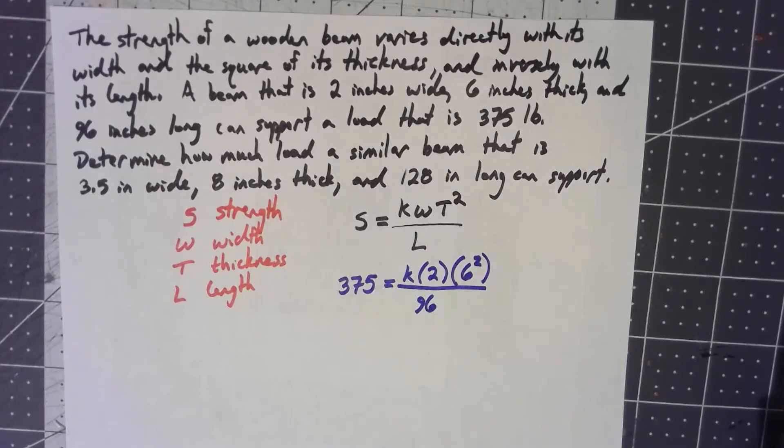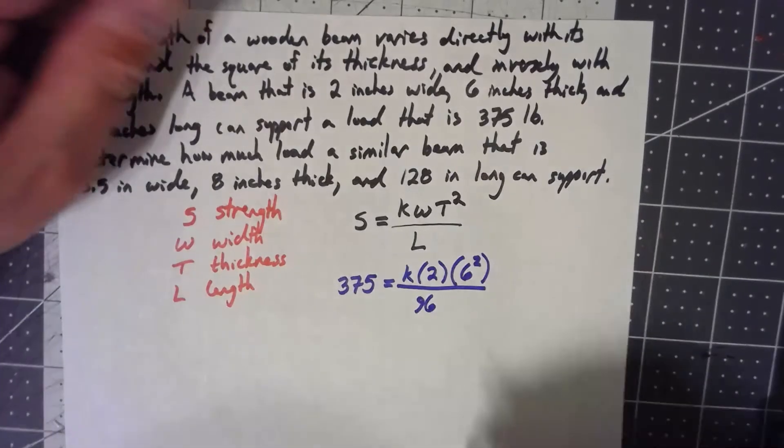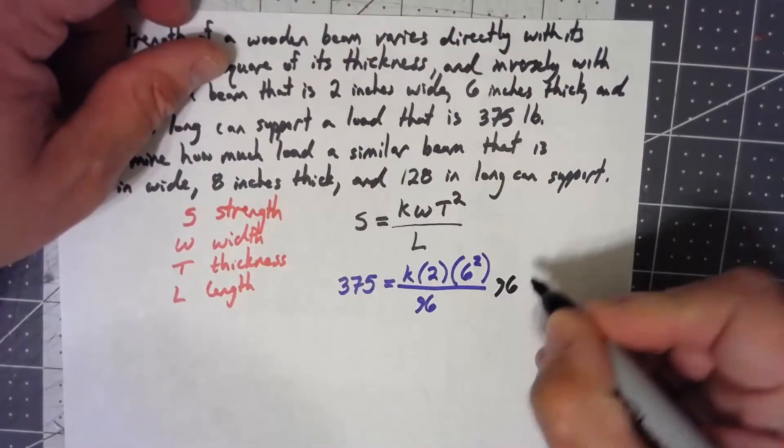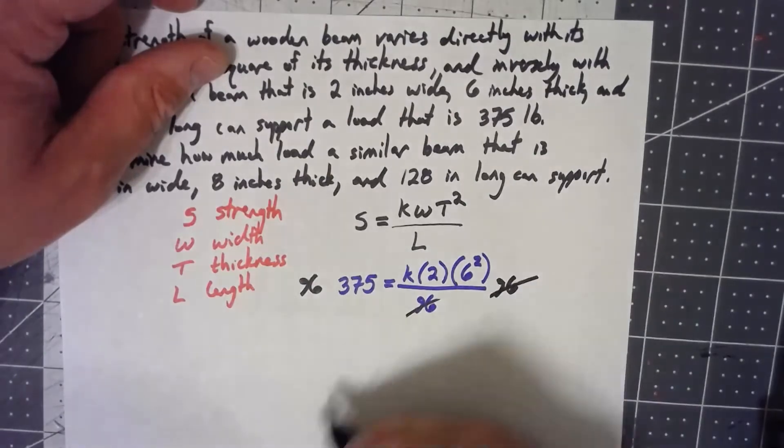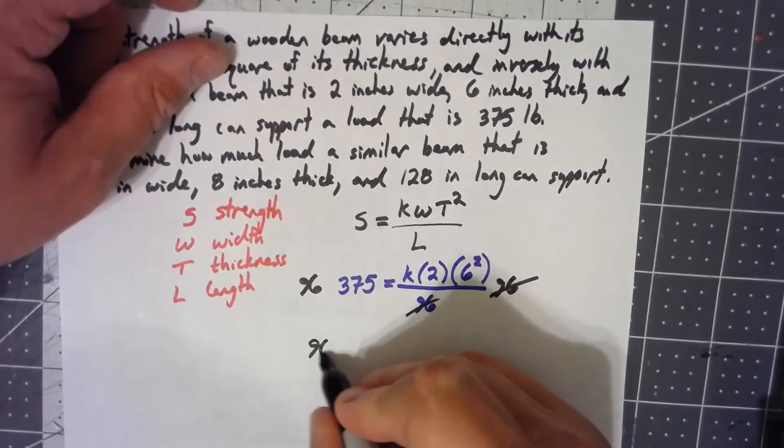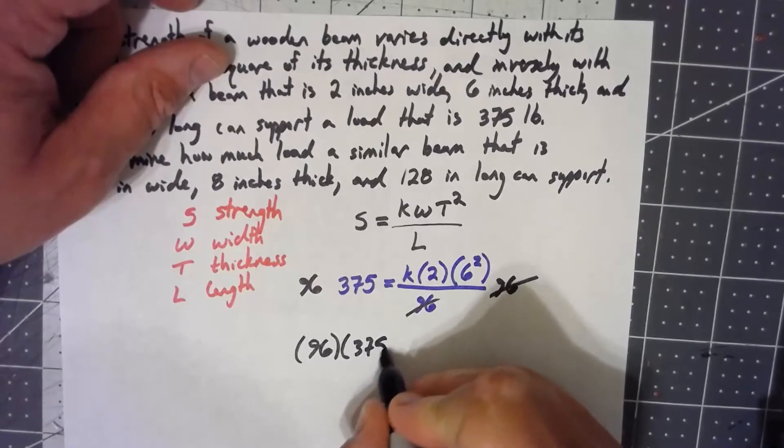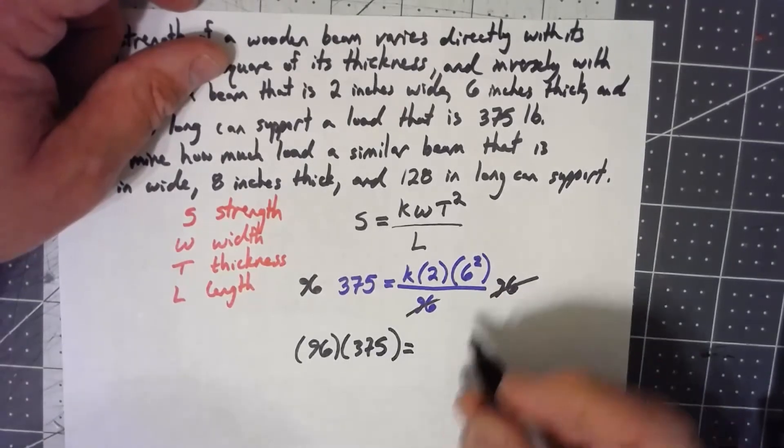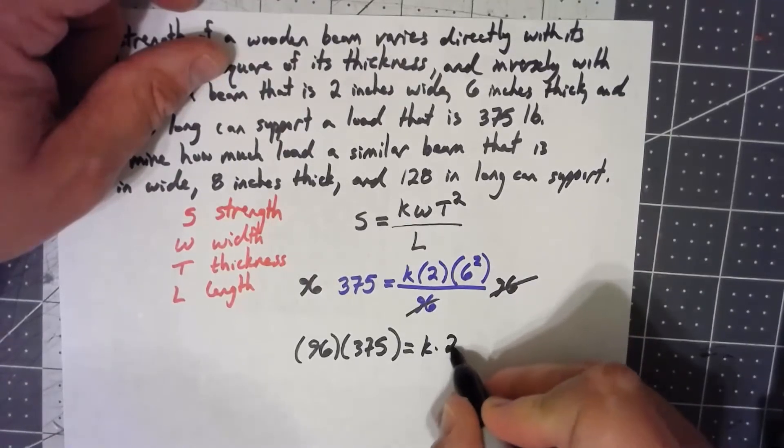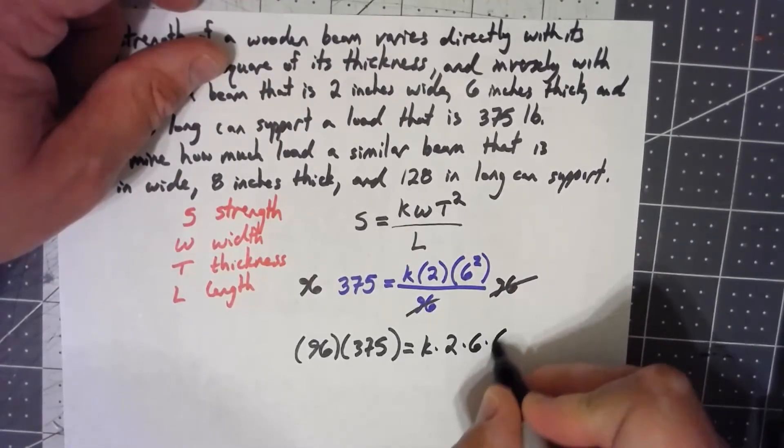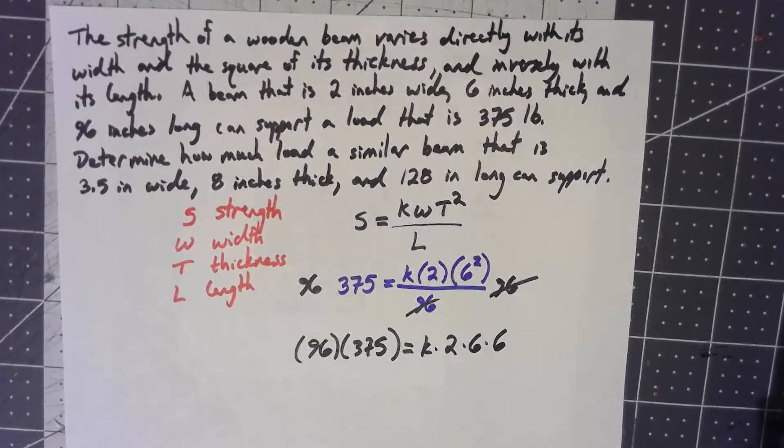Okay, let's go ahead and do some math here. Multiply both sides by 96 first. So I don't know what 96 times 375 is. I hope I can figure this out in a second. And that's going to give me K times 2 times 6 times 6. I could multiply that out, but I think we can make our lives a little bit easier by doing it one step at a time.